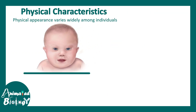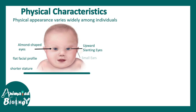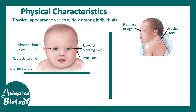Let us understand the overall appearance of these babies. They have almond-shaped eyes, a flat facial profile, short stature, upward slanting eyes, small ears, and a mongoloid kind of face. The nasal bridge is quite flat, which is apparent from a side profile. Also, a nuchal fold is present in the neck region.